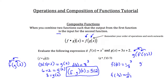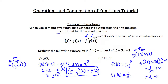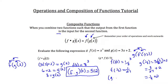Now we plug 1/27 into g: 3 times 1/27 plus 2. That gives us 3/27 plus 2, which simplifies to 1/9 plus 2. So our answer is 2 and 1/9, meaning g of f of 1/3 equals 2 and 1/9.